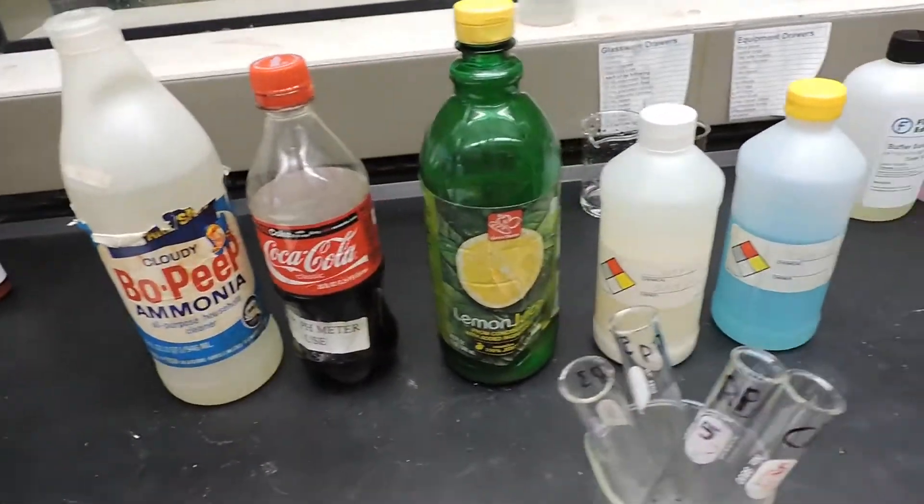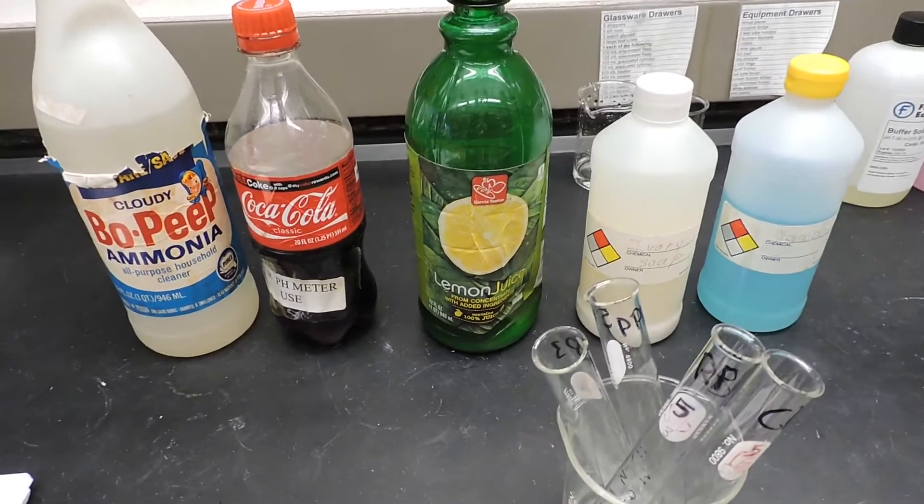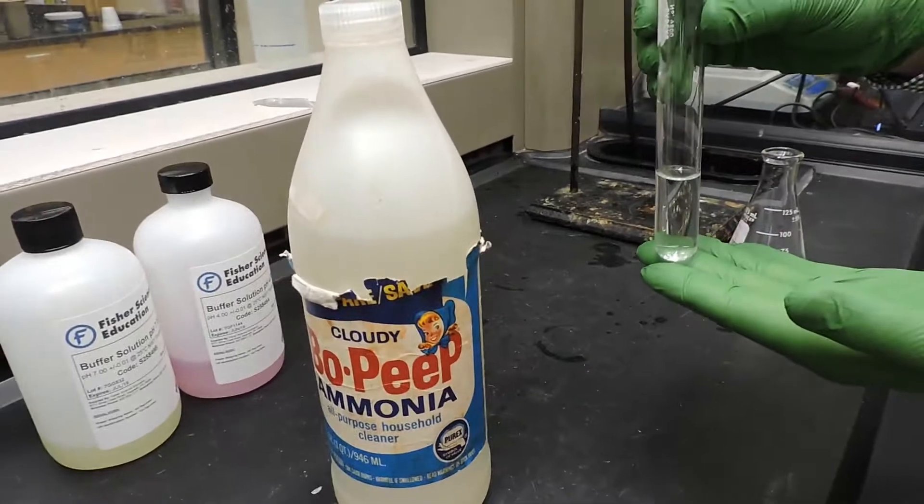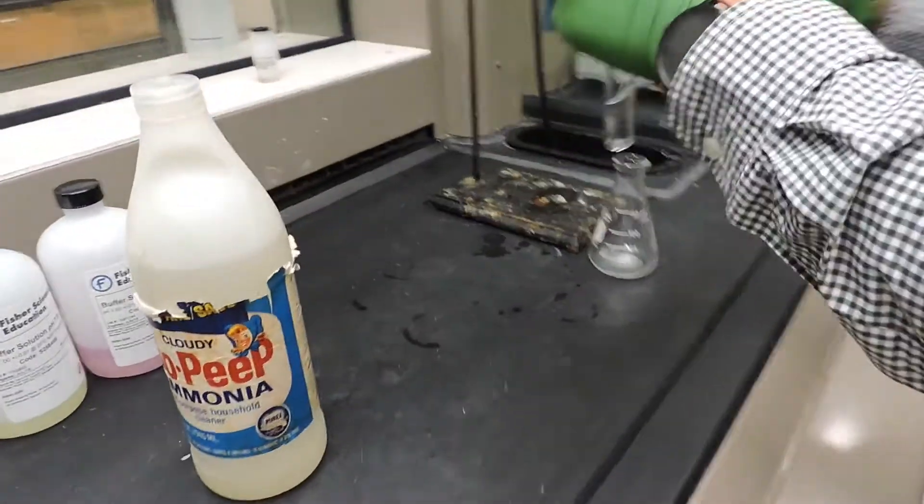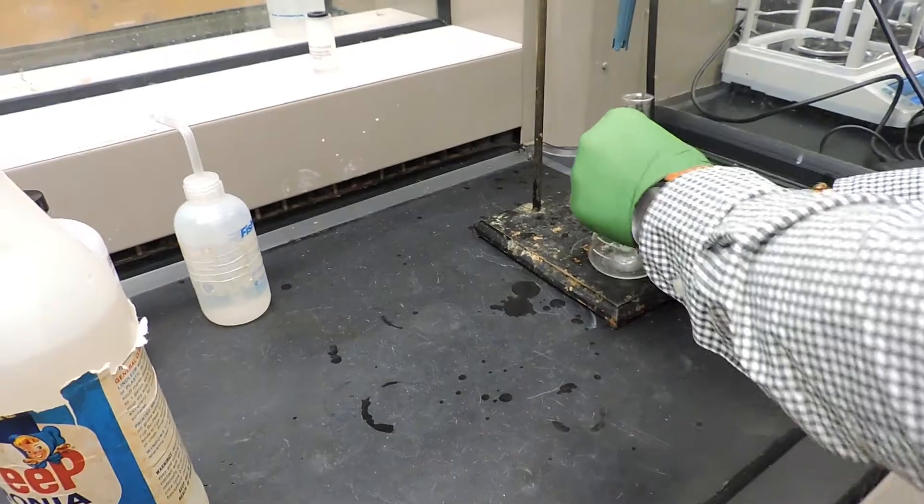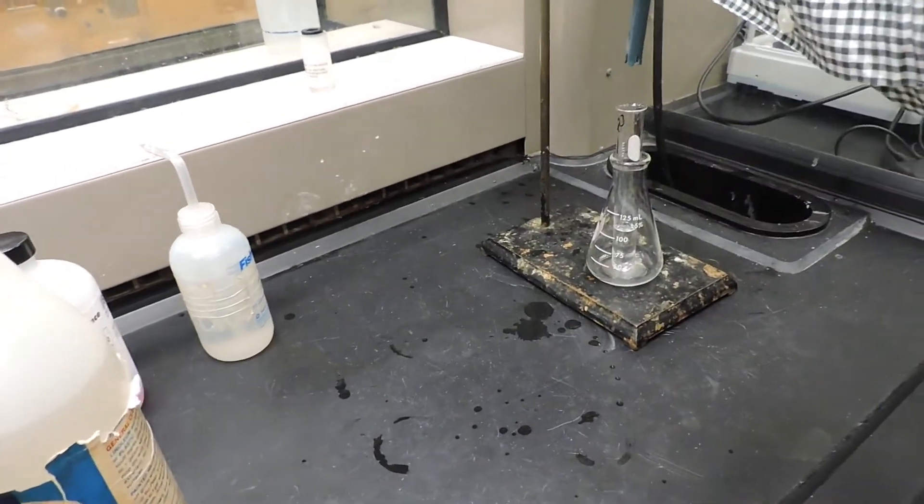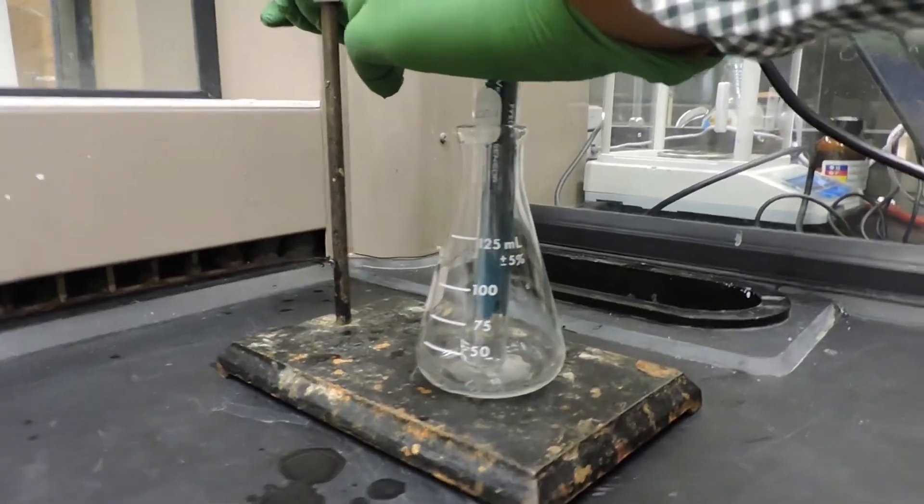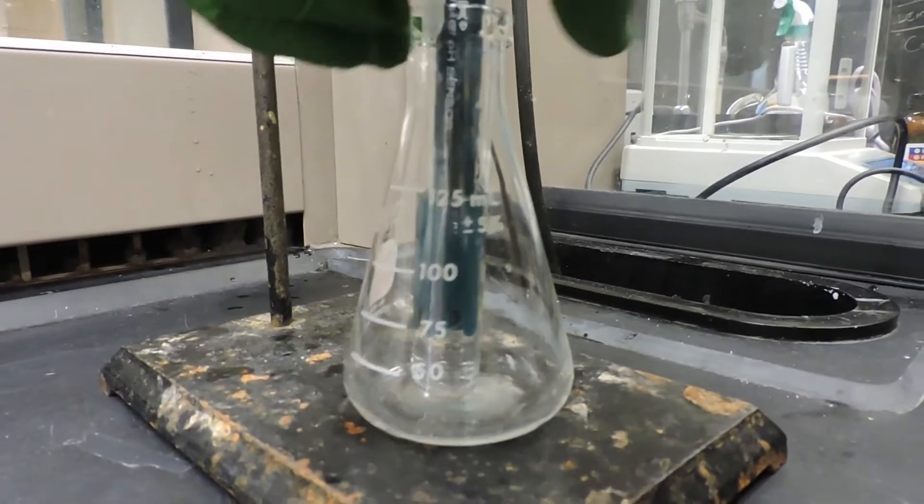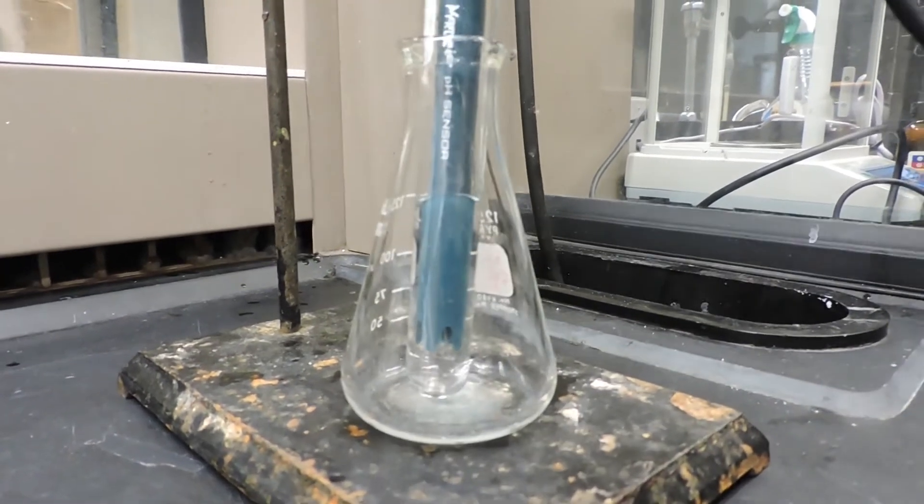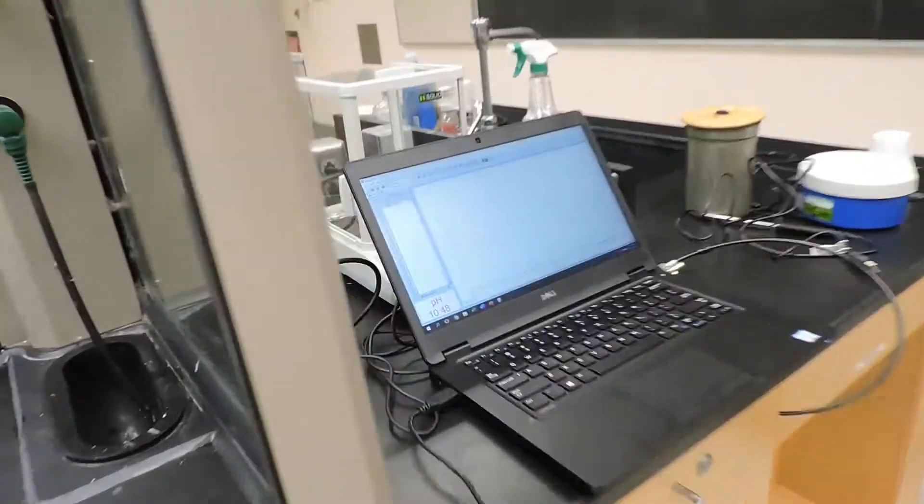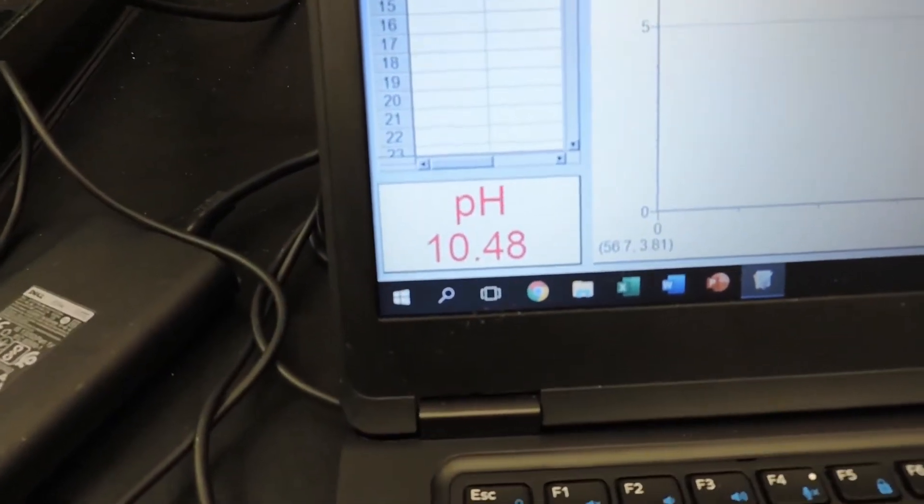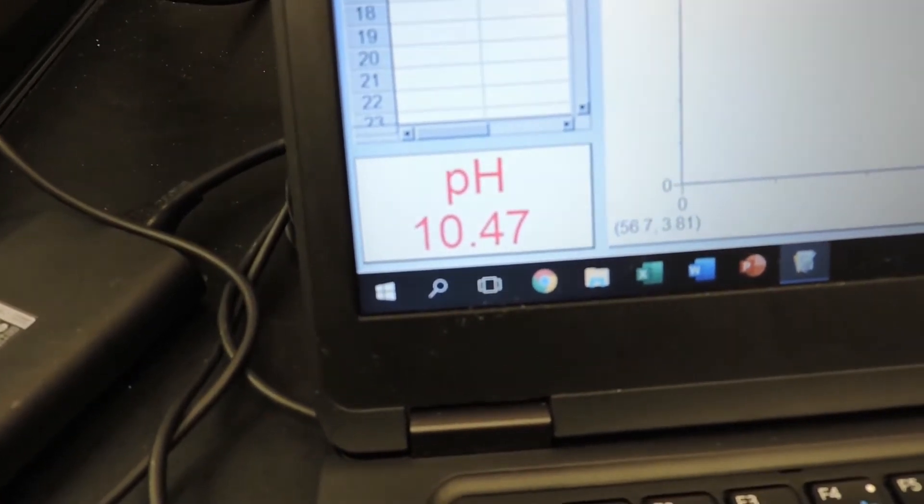Here we have various different substances that we're going to test the pH for each of them. The first one that we're going to do is some ammonia. We're going to pour some in a medium-sized test tube or a large test tube, and we're just going to dip the probe into the solution as you can see here. Our Logger Pro software will tell us the pH. So the pH for ammonia is 10.47.